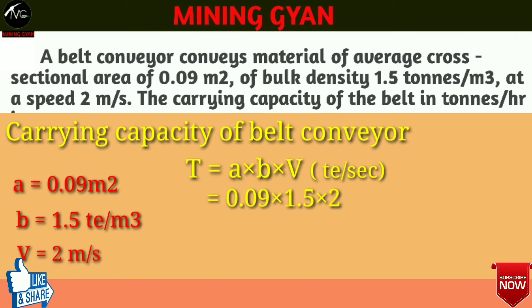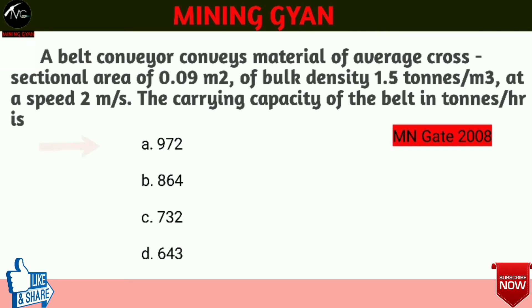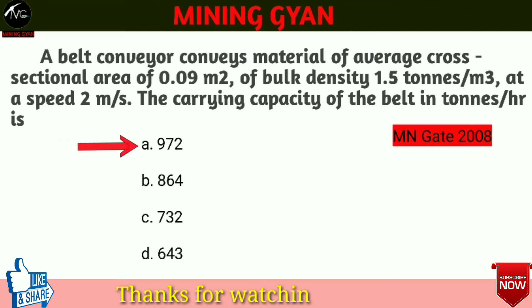A, B और V का value formula में रखके solve करेंगे तो T का value आएगा 0.027 ton per second। Question में belt carrying capacity ton per hour में पूछा है, तो ton per hour में निकालने के लिए 3600 से multiply कर देंगे। Finally answer आएगा 972 ton per hour। So the right answer is option A — carrying capacity of belt is 972 ton per hour.